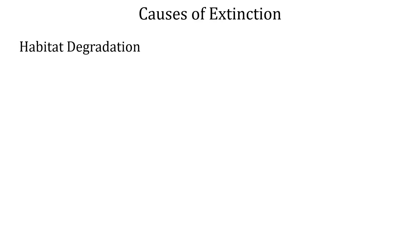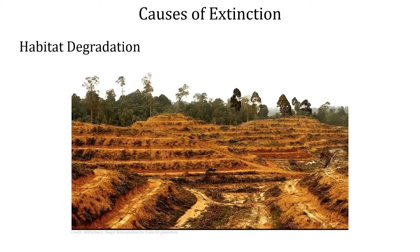Some of the causes of extinction: one is simply habitat degradation — clearing out forests and land for logging, or in this case we're seeing deforesting to create land for a palm oil plantation, or clearing out land to build houses and housing developments. Any type of activity where the natural habitat is altered in some way would be habitat degradation.